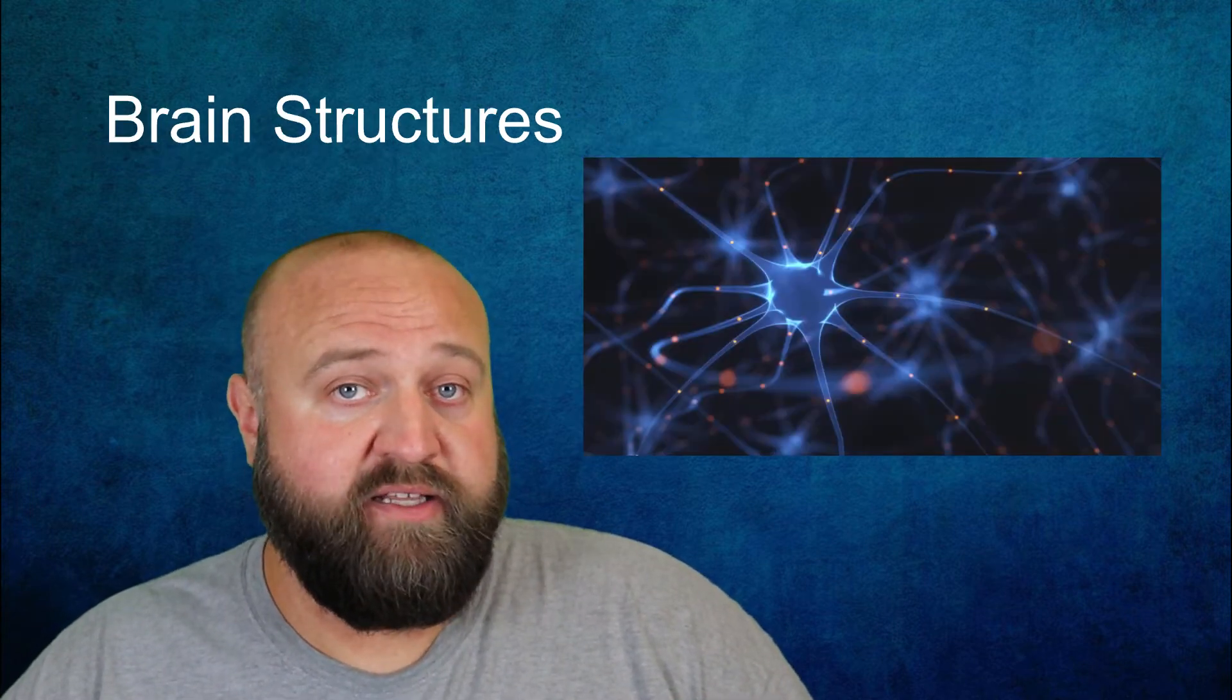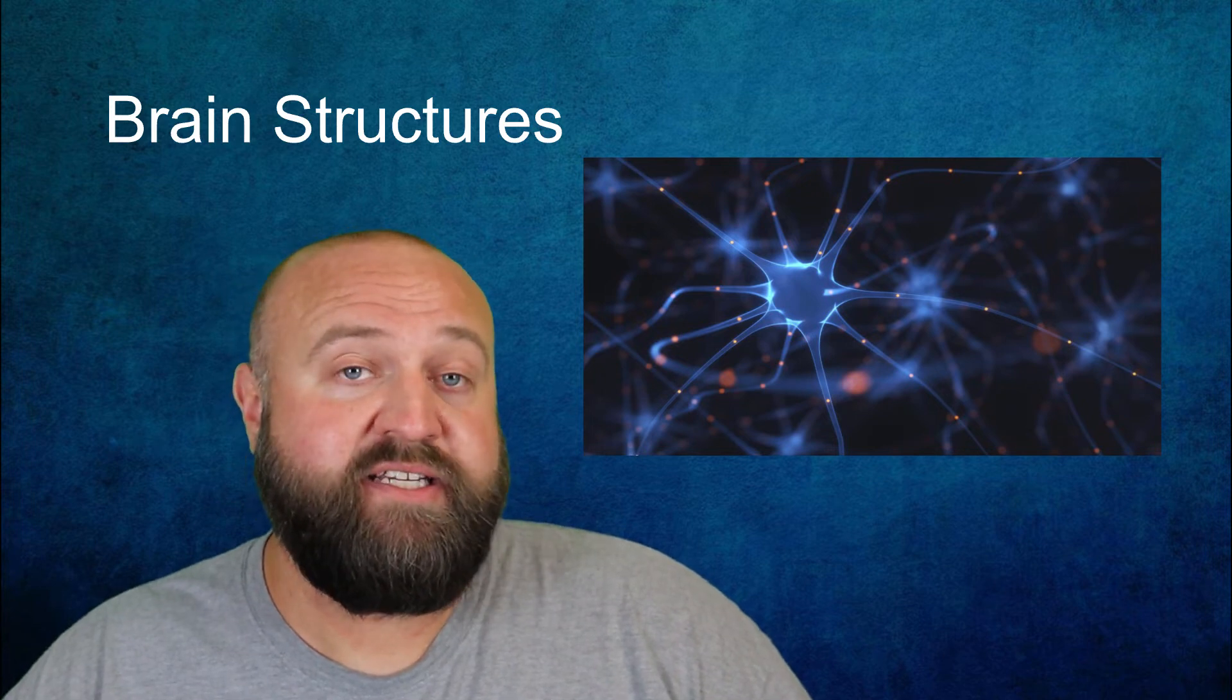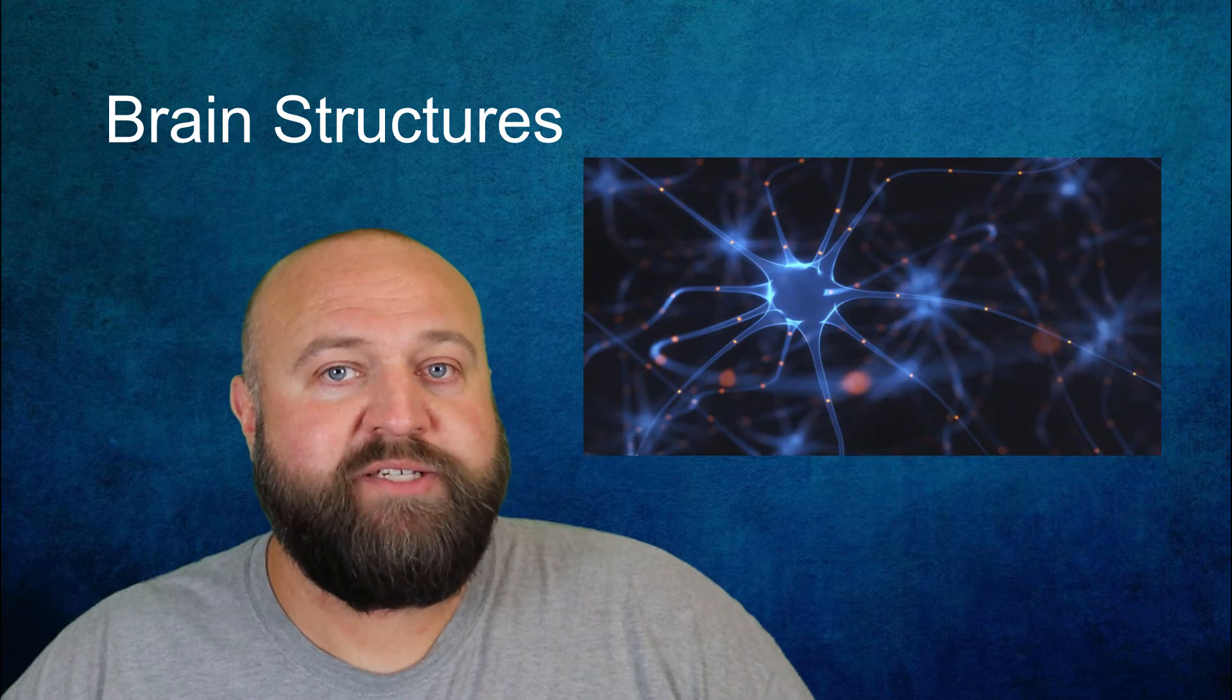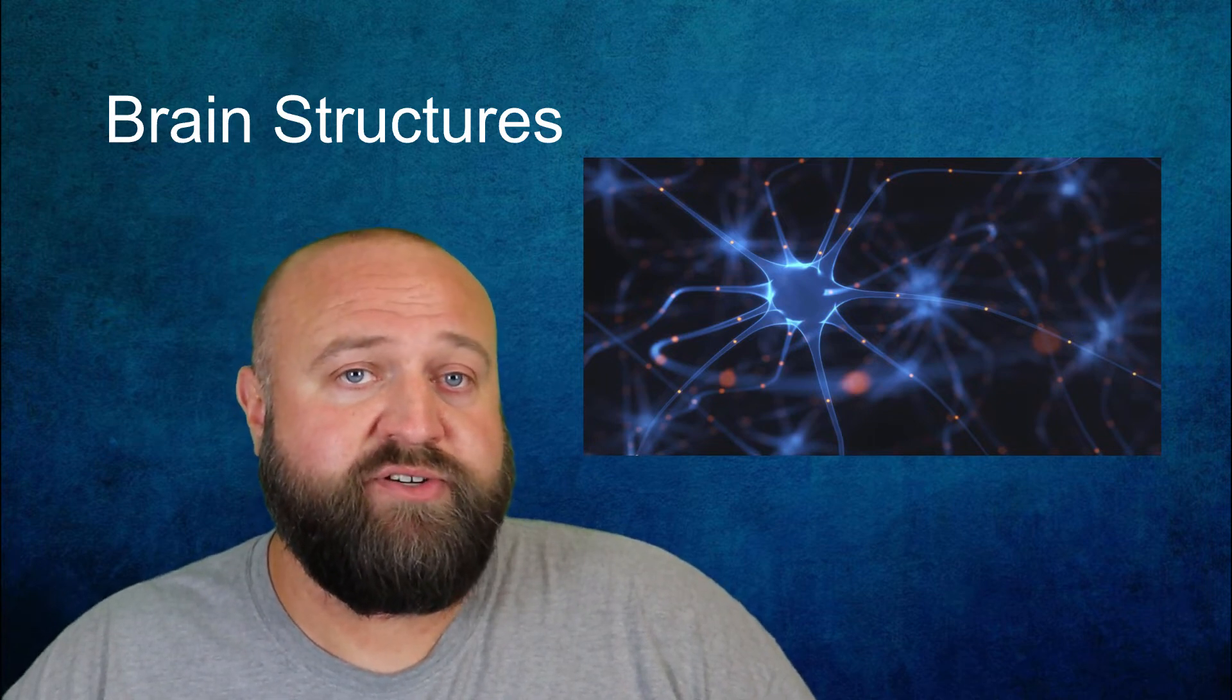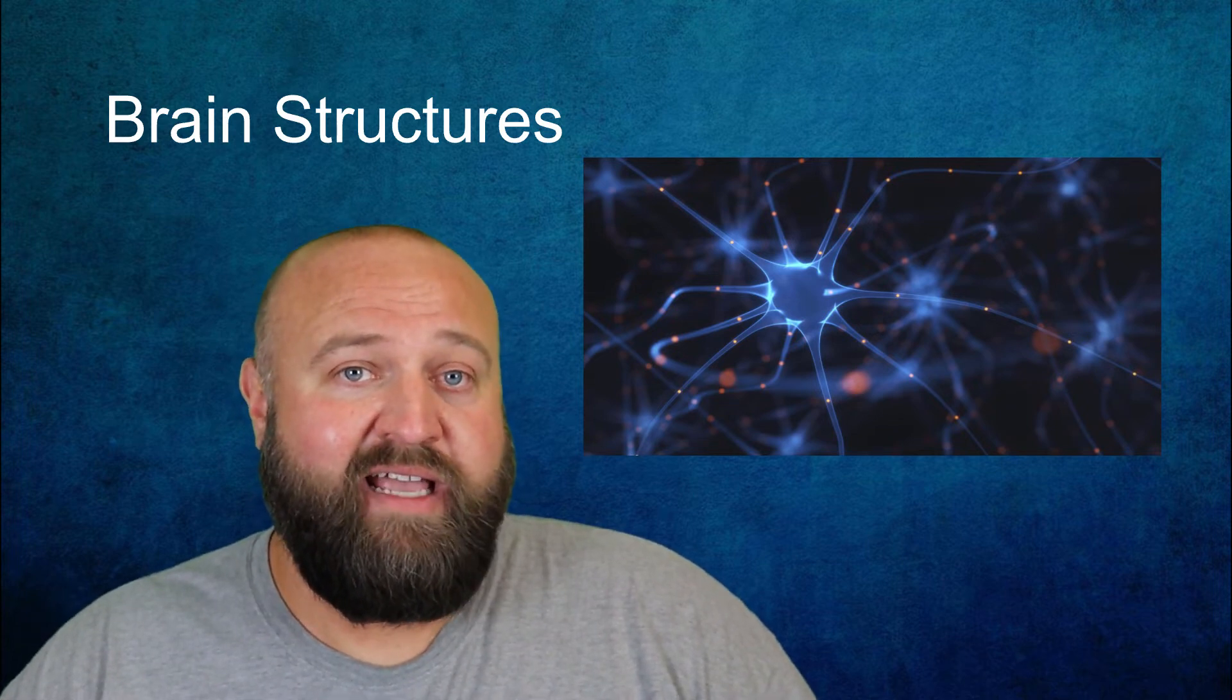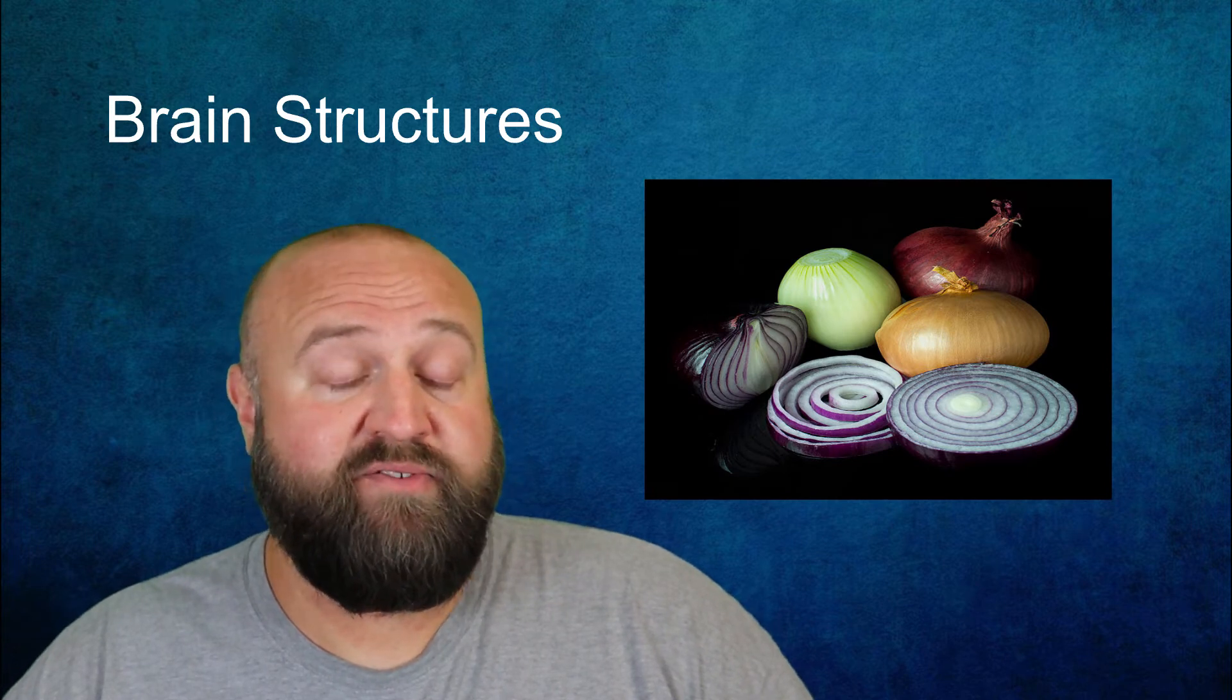All of these cells, neurons and glial cells, form an interconnected web of structures that constitute your brain. Often, people think of your brain as being a solid object, but it actually is composed of many different structures. In fact, you can kind of think of your brain as being similar to an onion. It has many different layers and each of those layers have different areas that specialize in certain functions.